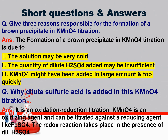Give three reasons responsible for the formation of a brown precipitate in KMnO4 titration. One: the solution may be cold. Two: the quantity of dilute sulfuric acid added may be insufficient. Three: KMnO4 might have been added in too large an amount.